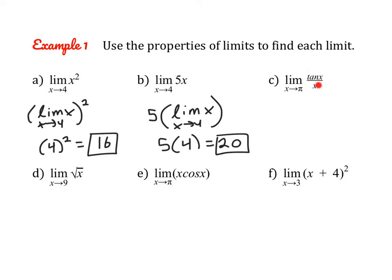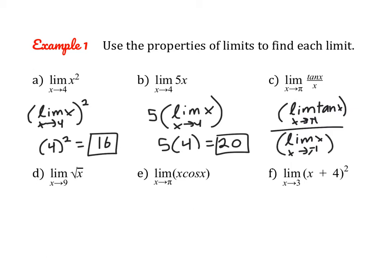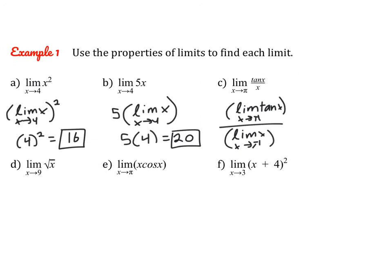Here we can use the quotient property. Instead of finding the limit of the entire function, let's find the limit of tangent of x as x approaches pi, and then find the limit of x as x approaches pi — finding those limits separately and then dividing. The limit of tangent of x as x approaches pi is 0, and the limit of x as x approaches pi is pi. So our overall limit is just 0.